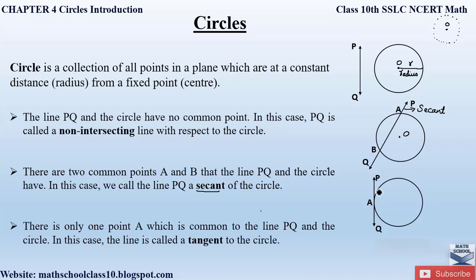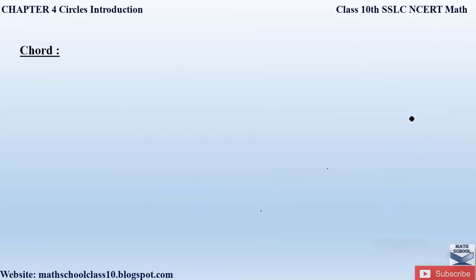The third condition is when a circle and the line segment PQ intersect each other at only one common point A — then this line PQ is called the tangent of the circle. So there is only one point A which is common between the line PQ and the circle with center O, and in this case PQ is called the tangent to the circle.